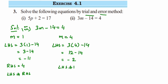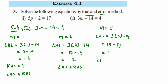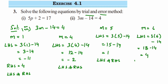If m equal to 5, then LHS is 3 into 5 minus 14, which is 15 minus 14, which is 1. LHS is not equal to RHS. Next, let's try m equal to 6: LHS is 3 into 6 minus 14, which is 18 minus 14, giving answer 4. So LHS is equal to RHS. Therefore m equal to 6 is a solution of the equation.